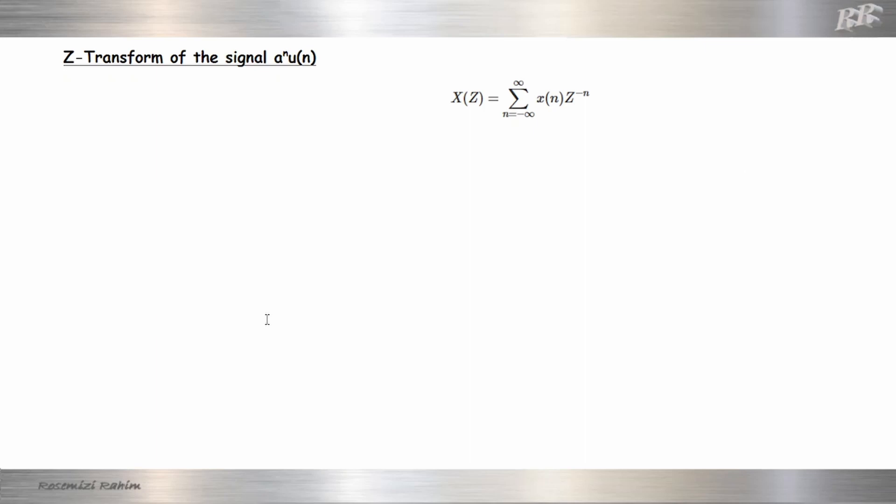Hello everyone, in this video I will show how to find the Z-transform of a signal a to the power of n, u(n) signal. We want to transform this kind of signal. Let's say our signal is x(n) equal to a^n u(n), the unit step function. So we're going to do Z-transform.